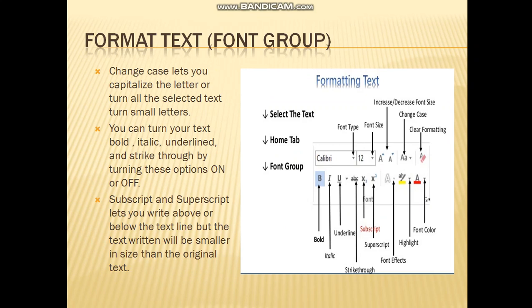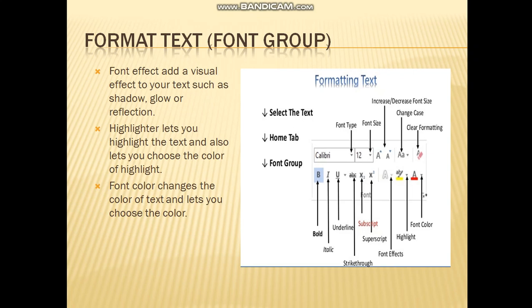There are also buttons for changing the case size — you can capitalize or make your words smaller by clicking on it. You can turn your text bold, italic, underline it, and even strikethrough it by clicking on these options. If you click on the bold button your text will be bolded, and the same applies for all the other buttons. The next two buttons are subscript and superscript. Subscript is written below the text line and superscript is written above the text line; both are smaller in size.